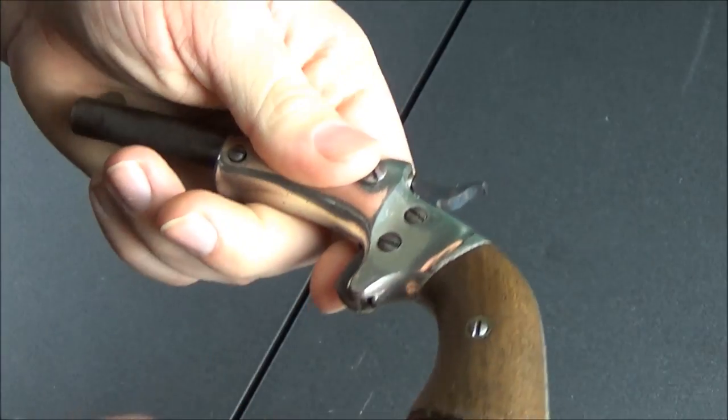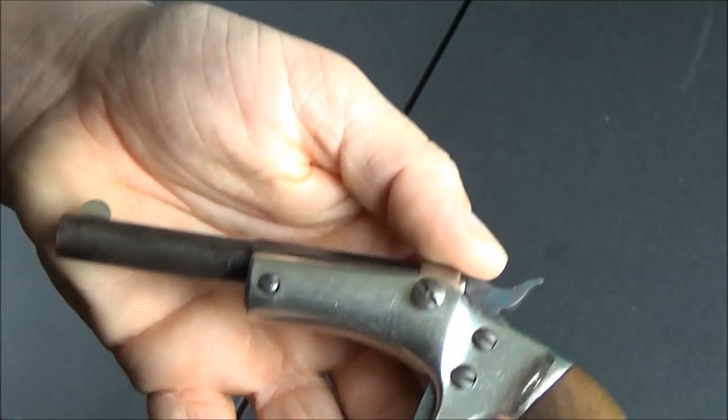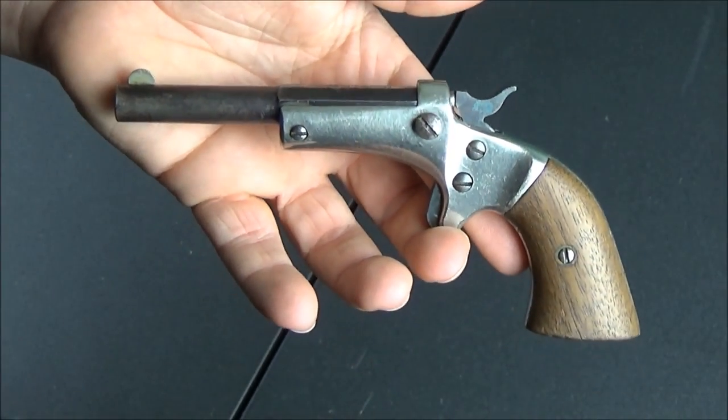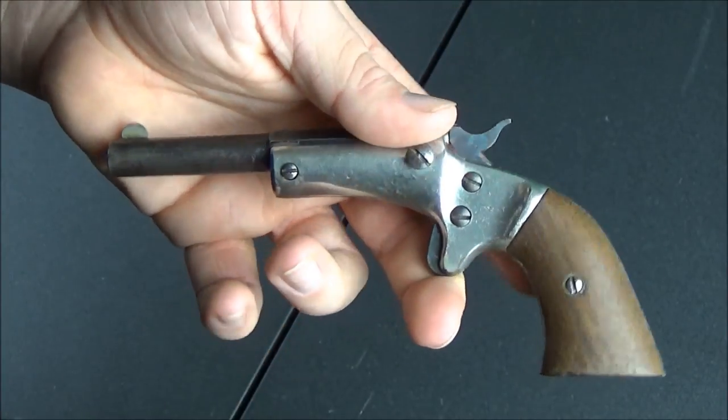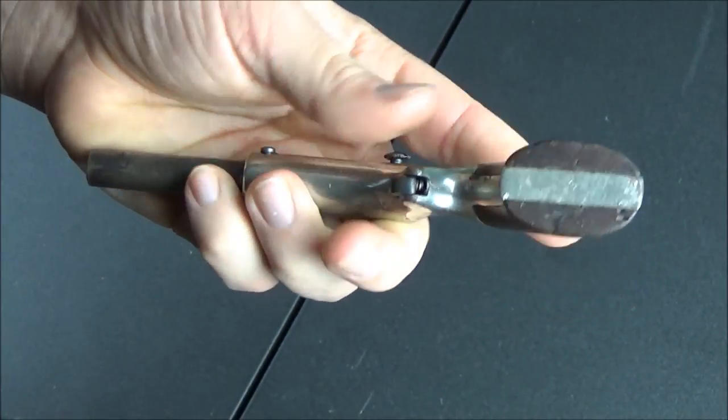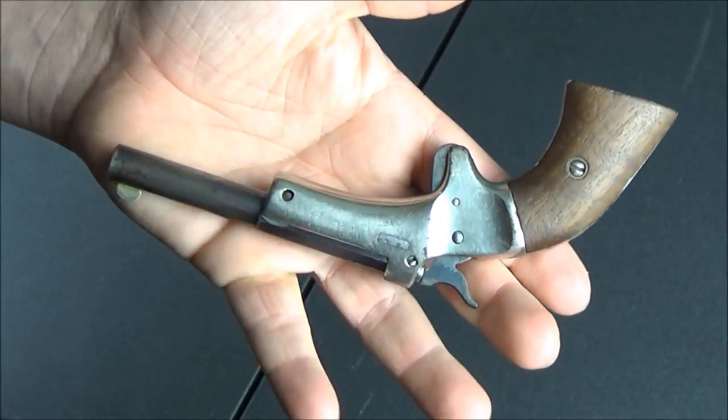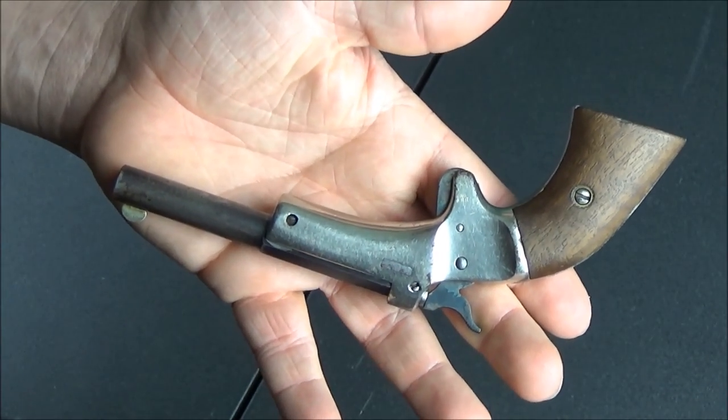So this is a .22 caliber and it's a single shot and like I said it is a tip up. It's made of nickel and the wooden handle is walnut. The barrel on this one is about 3.5 inches long and I'm going to place it next to a $1 bill for comparison.